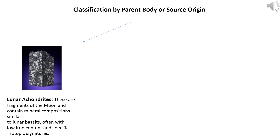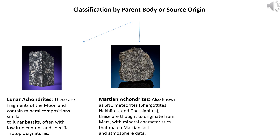Classification by parent body or source origin. Lunar achondrites: these are fragments of the Moon and contain mineral compositions similar to lunar basalts, often with low iron content and specific isotopic signatures. Martian achondrites, also known as SNC meteorites (shergottites, nakhlites and chassignites): these are thought to originate from Mars, with mineral characteristics that match Martian soil and atmosphere data.